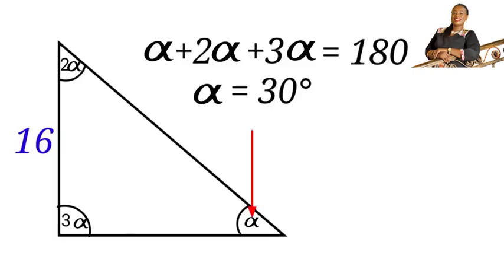So here, this angle alpha is 30 degrees. This angle, 2 alpha, will be 2 times 30, which will give us 60 degrees. And this angle, 3 alpha, will be 3 times 30, which will give us 90 degrees.